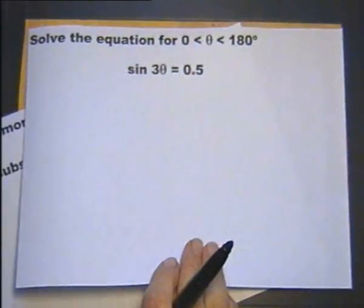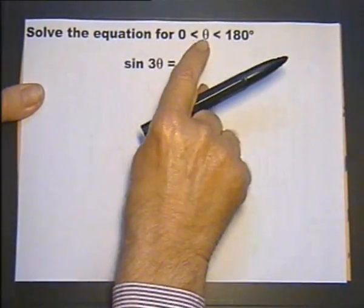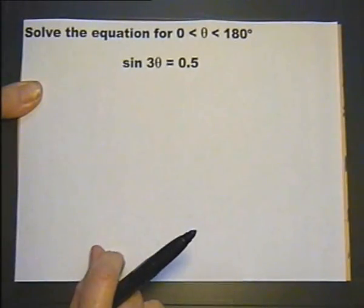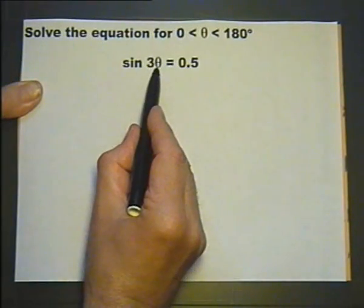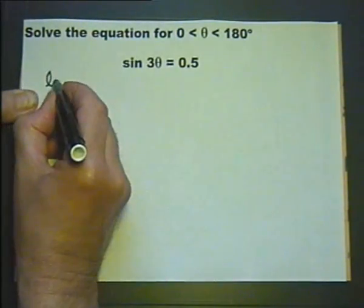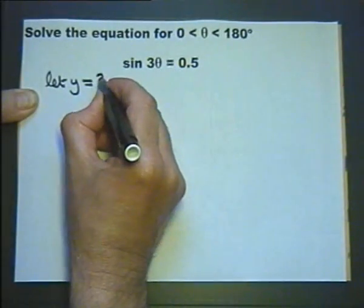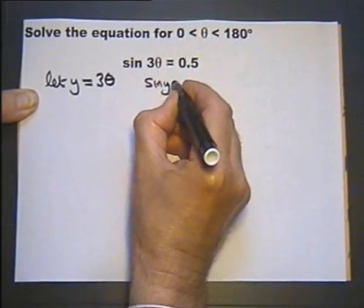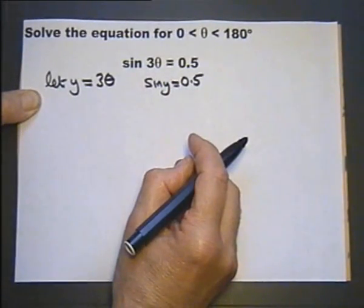Let's try solving this equation for values of theta between 0 and 180 degrees. We could simplify this equation if it just said the sine of any letter equals 0.5. So that's what we're going to do — we're going to let y equal 3 theta. Then the equation becomes sine of y equals 0.5, which is definitely an easy equation to solve.